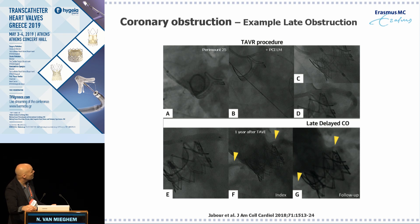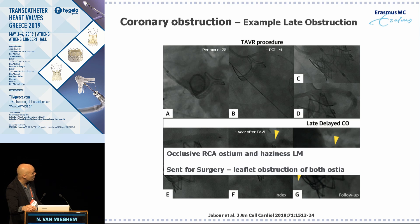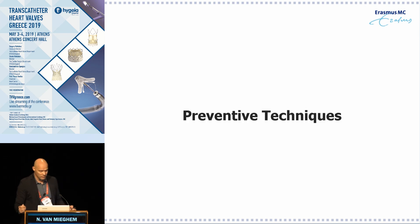A late delayed event occurred in a valve-in-valve case: a Paramount 25 with a Sapien XT implanted inside. During the index procedure a left main stent was also placed, but one year later the patient was admitted with ACS. They found problems with both the right and left coronary — no right coronary visible and haziness at the left coronary. After several attempts the patient was sent for surgery, revealing leaflet obstruction of both ostia one year after the procedure.